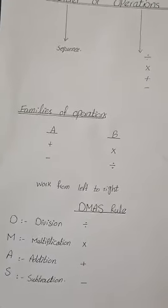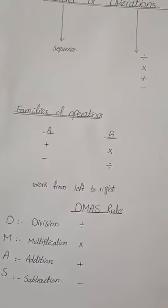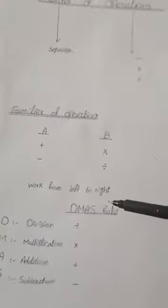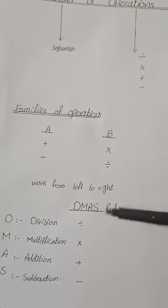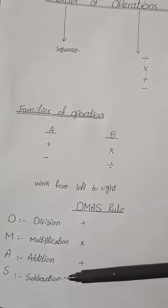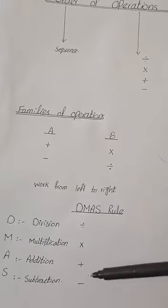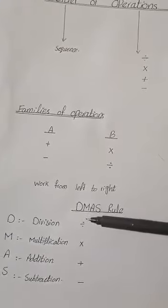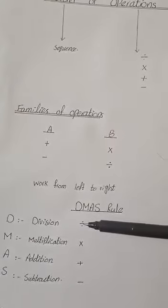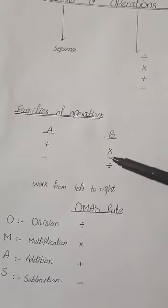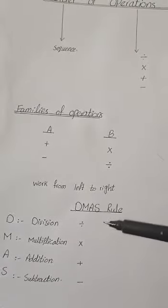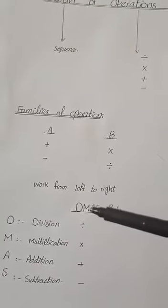In this topic, we will follow a very important rule called the DMAS rule. DMAS stands for Division, Multiplication, Addition, and Subtraction. This rule we follow only when we have more than two operations in our question, or a mixture of families — that is, operations from two different families. Then we use the DMAS rule.